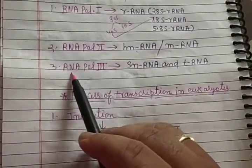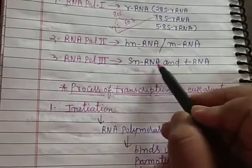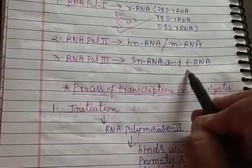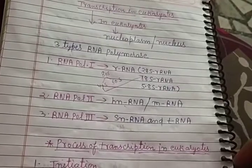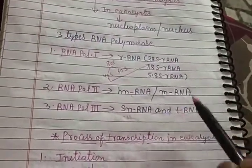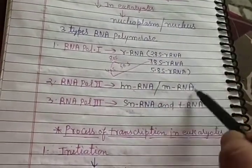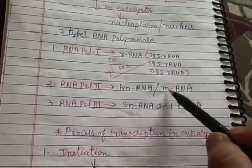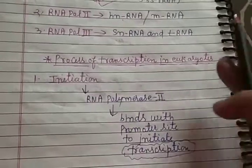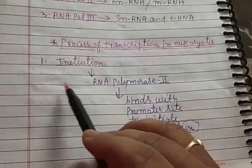RNA polymerase III provides help for the formation of snRNA (small nuclear RNA) and tRNA (transfer RNA). Collectively, rRNA, mRNA, and tRNA play a major role in protein formation through the translation process.